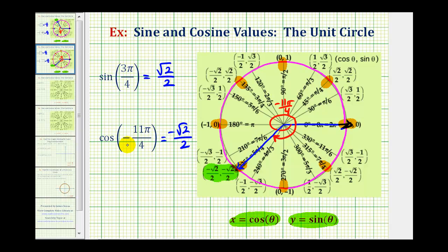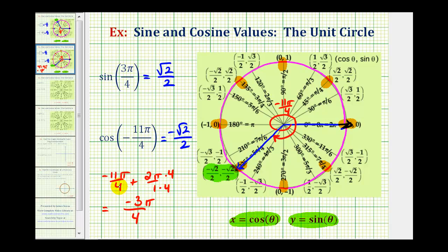We could also have used an angle coterminal with negative 11 pi over four to find this function value, by adding multiples of two pi radians. For example, negative 11 pi over four plus two pi gives a common denominator of four: negative 11 pi plus eight pi equals negative three pi over four radians, which has the same terminal side. Or we could add another two pi to find a positive angle with the same cosine function value. Coterminal angles can always be used to find these values.